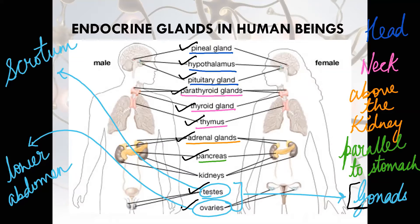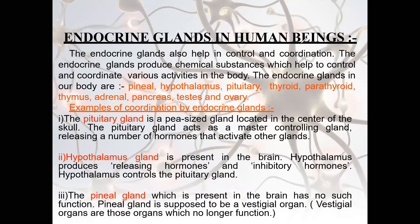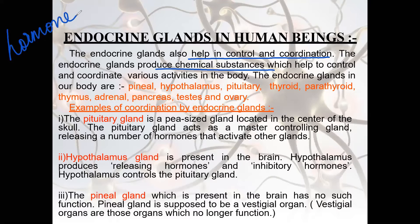Now we will learn about the function and the secretion of these glands. Endocrine glands in human beings help in control and coordination by producing a chemical substance called a hormone, which helps in coordination.